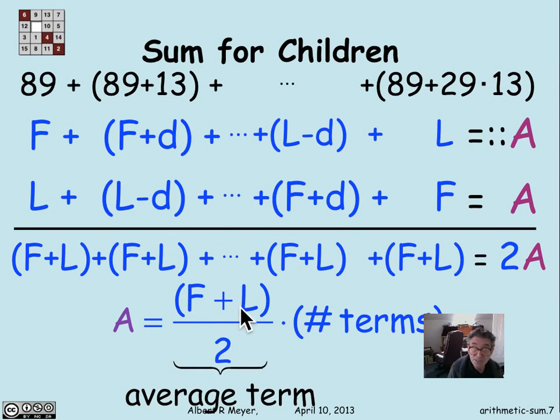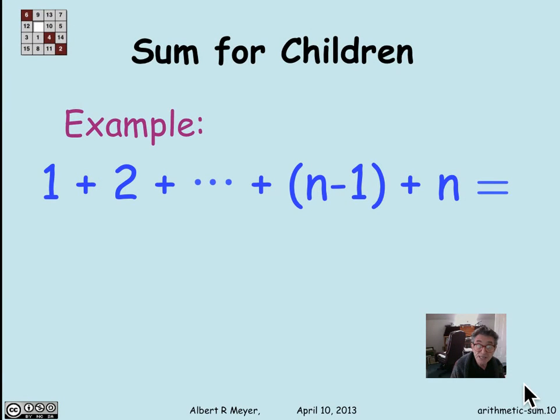By the way, the first term plus the last term divided by 2 maybe is more memorable if you remember that it's the average term. It's the average size term times the number of terms. And that's how you sum up an arithmetic sum. So we can wrap up with a familiar example.